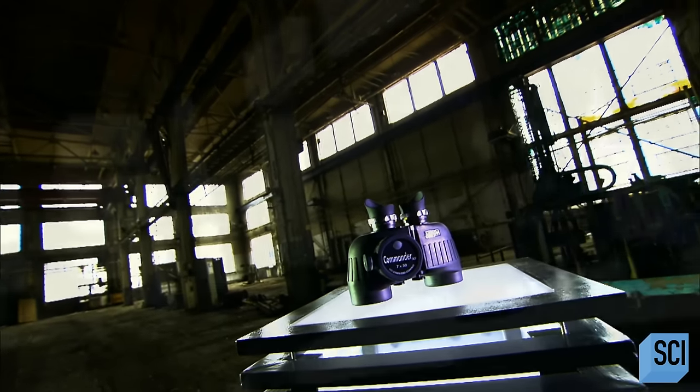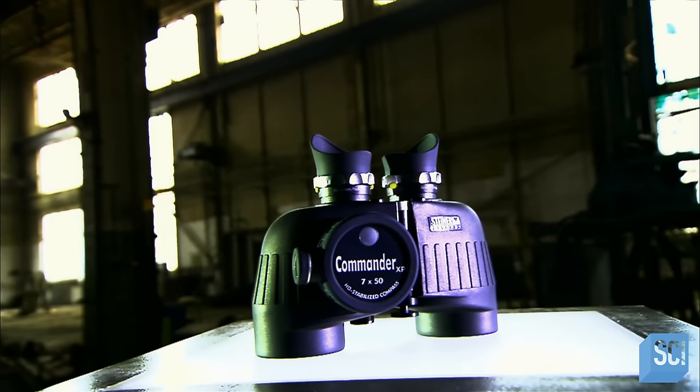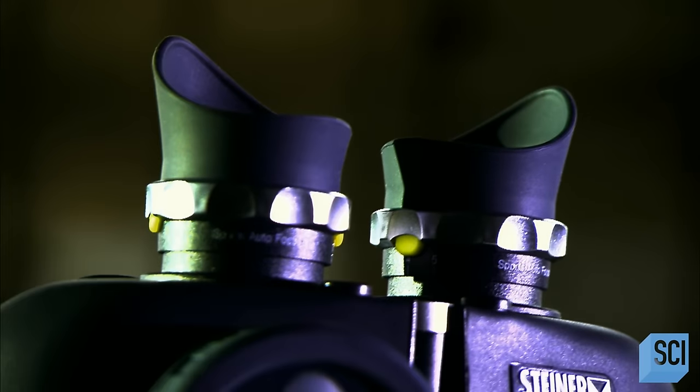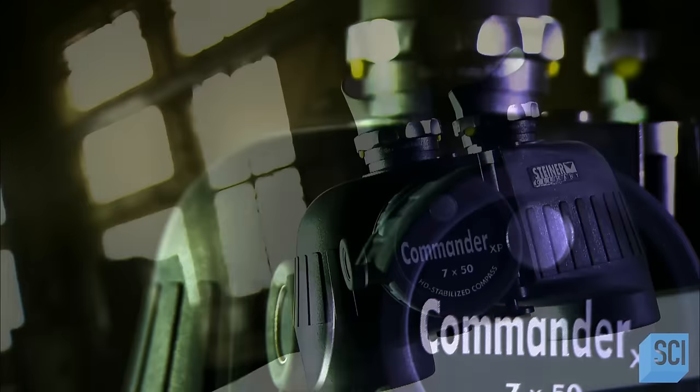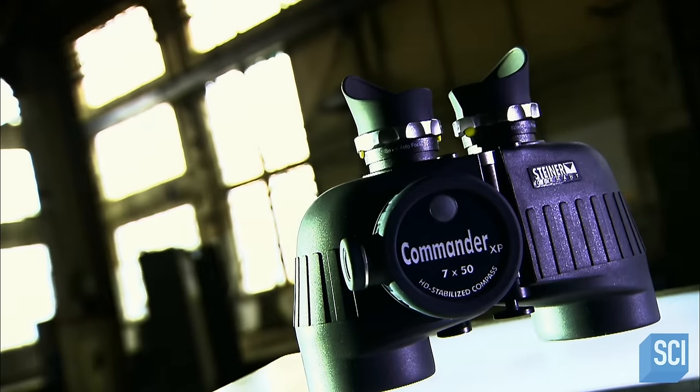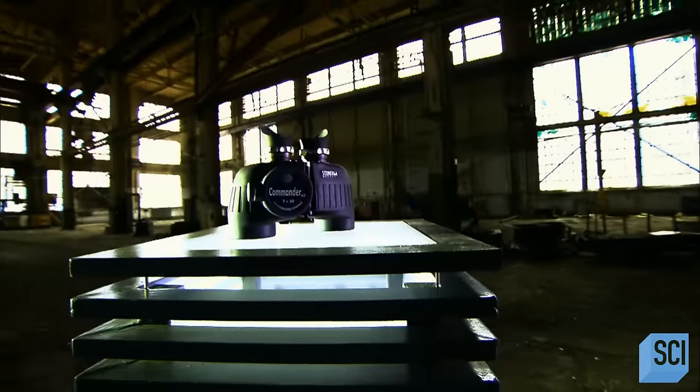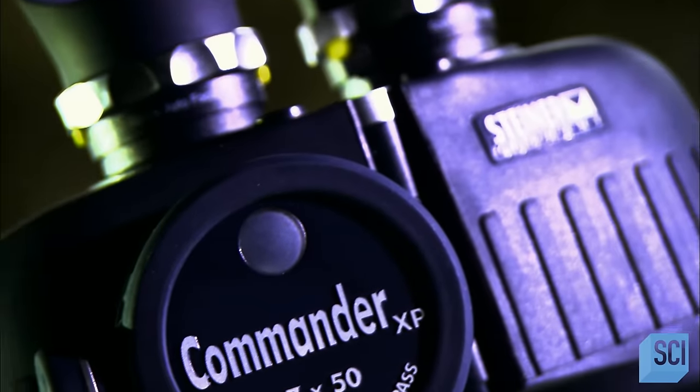A pair of binoculars is essentially a handheld double telescope. Light rays from the object you're viewing enter the lenses on the far end, the objectives. This projects an image just behind those lenses inside the binoculars housing. The smaller eyepiece lenses you peer through then magnify that image.